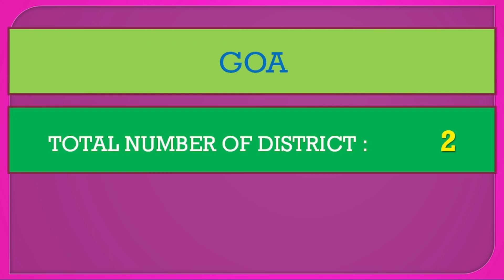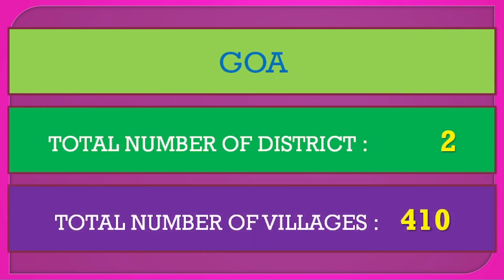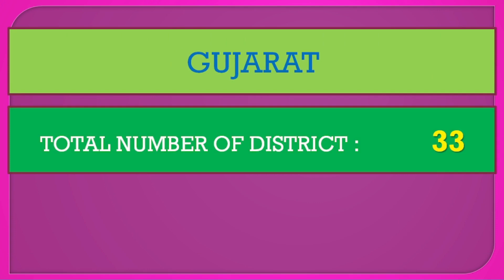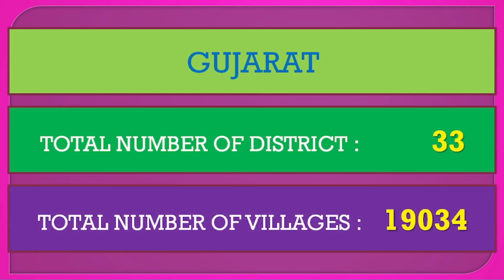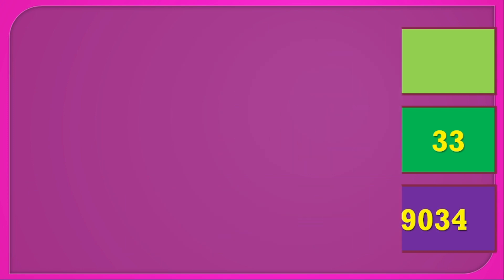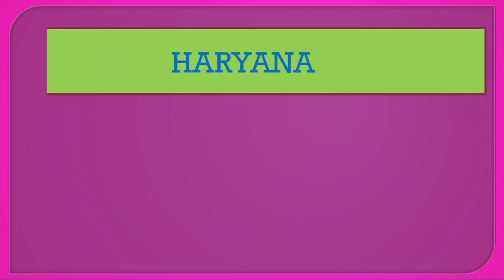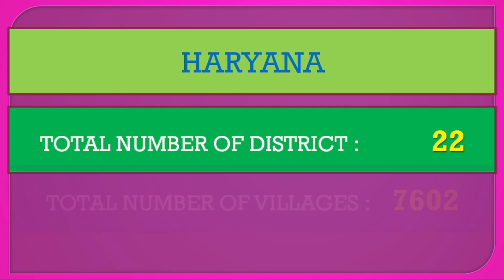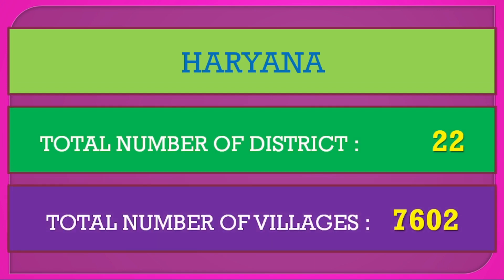Goa: total number of districts 2, total number of villages 410. Gujarat: total number of districts 33, total number of villages 19,034. Haryana: total number of districts 22, total number of villages 7,602.